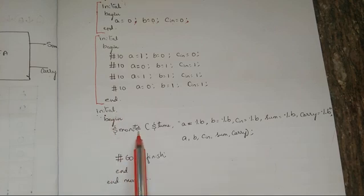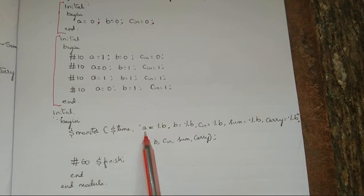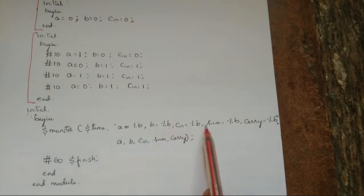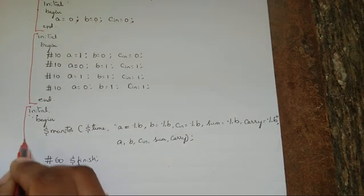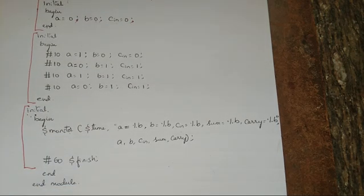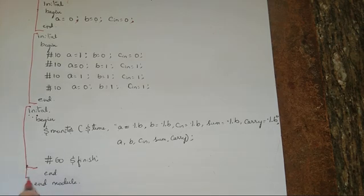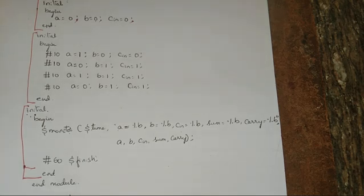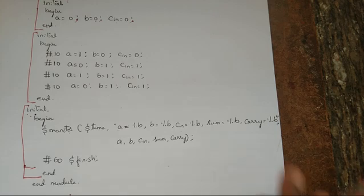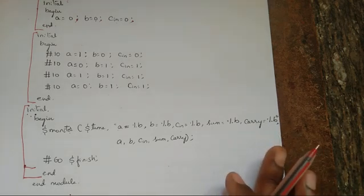Then we start the monitoring stage: initial begin monitor. We monitor all values — inputs A, B, C_in and outputs sum and carry — using dollar monitor and dollar finish, then end. This ends the monitoring stage, followed by end module. In the examination you have to write the code as well as explain it.